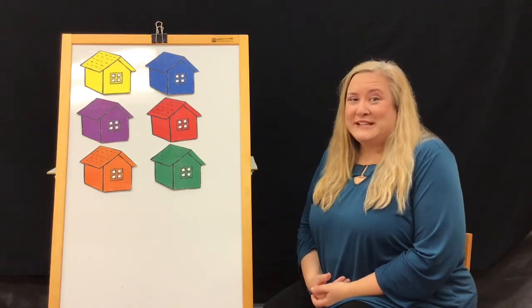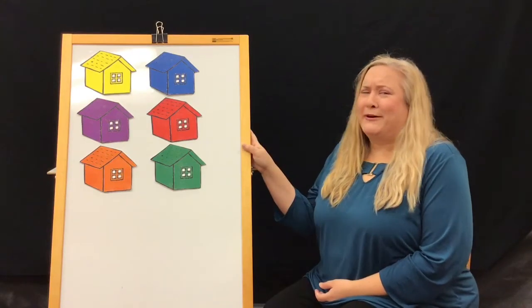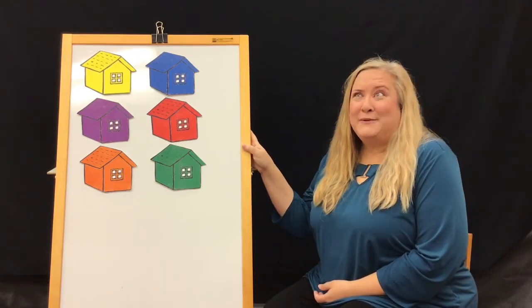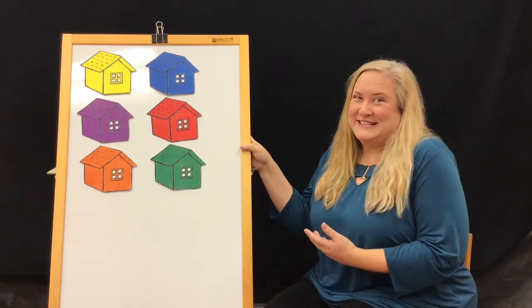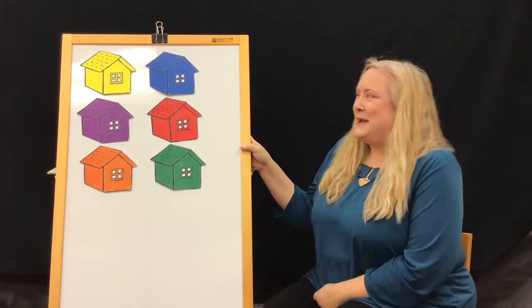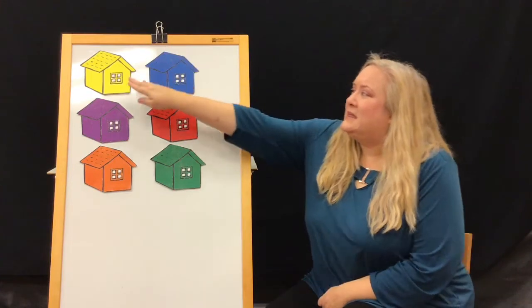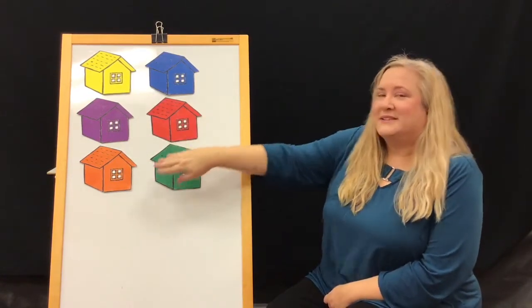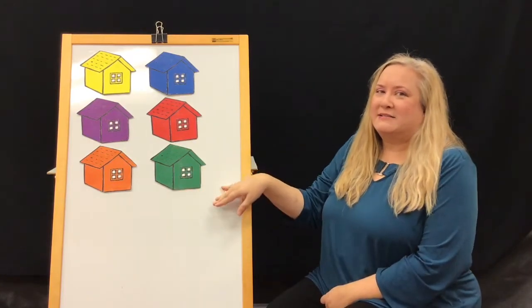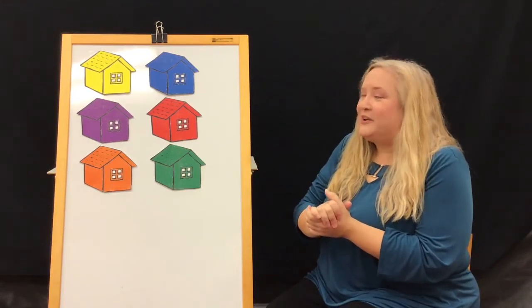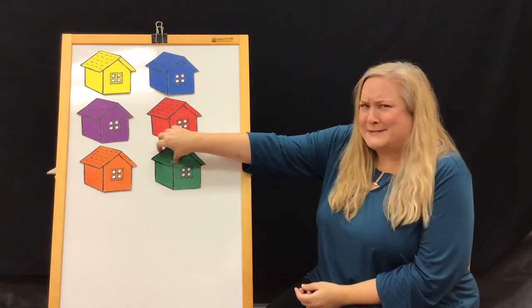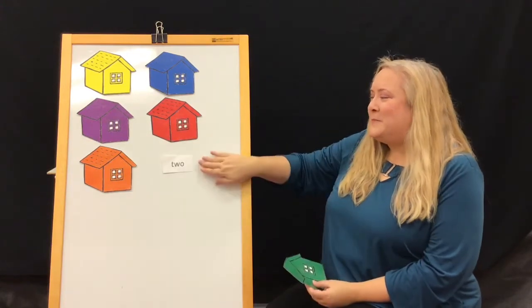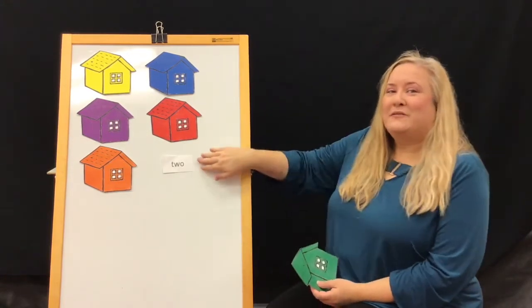Let's play with our sight words. This is a game called Little Penguin. Little Penguin is hiding in one of our houses. Let's see if we can find Little Penguin. Is he in the yellow house, the blue house, the purple house, the red house, the orange house, or the green house? Let's try green first. Is the penguin here? Nope. That's our sight word two for the number two.